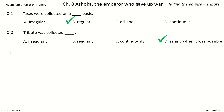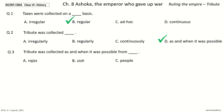Question three: tribute was collected as and when it was possible from blank. The options are rajas, people, or brahmins. Your time to choose. The answer is people. So tribute was collected as and when it was possible from people.